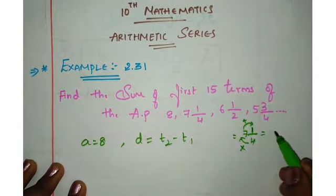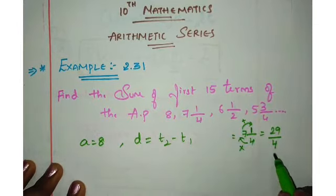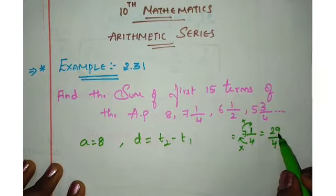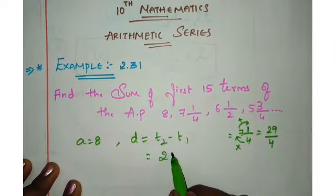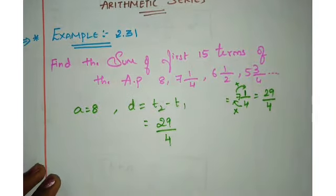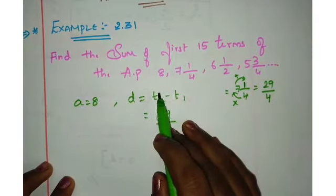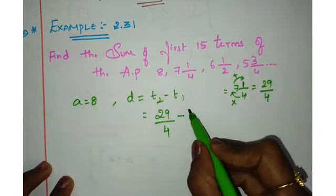So, 29 divided by 4. Got it? We convert the mixed fraction. 7, 4 is 28. 28 plus 1 is 29 divided by 4. So D value is 29 divided by 4. T2 minus T1 is 29 divided by 4.